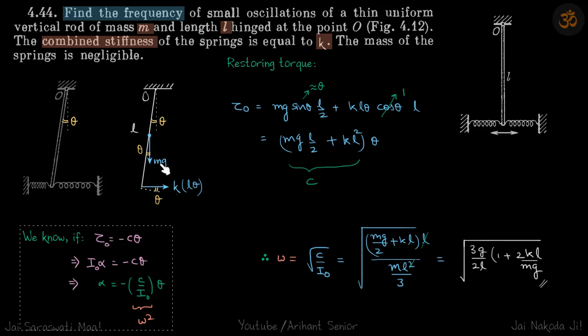So restoring torque due to mg will be mg sin theta into L by 2. And due to KLθ, restoring torque will be KLθ cos theta into L. So we find torque about O comes to be proportional to theta, which means it will perform SHM. And omega will be root of C by I₀.